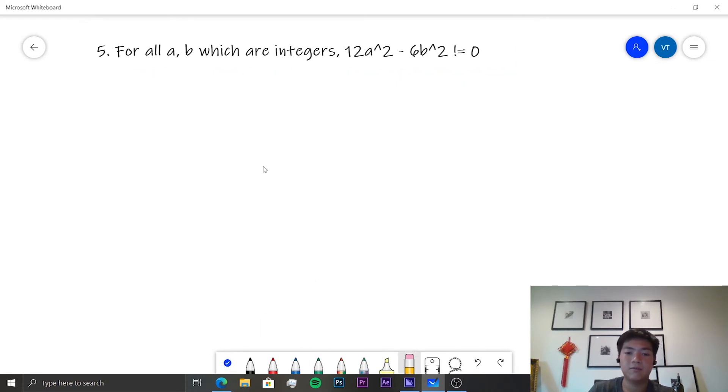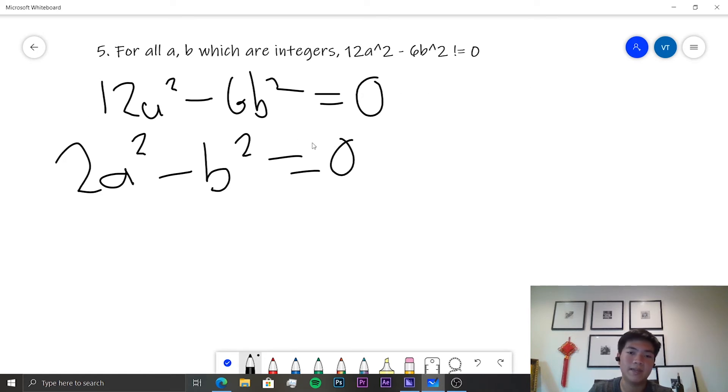Okay, so we want to assume that 12a squared minus 6b squared is equal to 0 for some numbers. Which this means is that 2a squared minus b squared is equal to 0 since we divide all of it by 6. And so that means 2a squared must equal b squared. And so the problem is that b must be equal to the square root of 2a squared. So what this means is that b squared over a squared must be equal to 2.